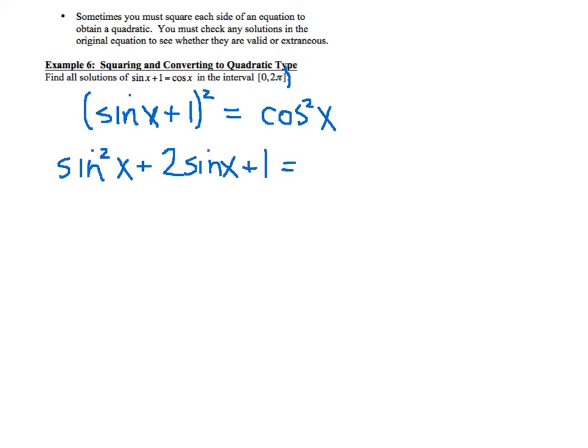And what we can do on the right is we can use a substitution for the cosine squared x. And if you substitute in 1 minus sine squared x from your Pythagorean identities, then we need to set this equation equal to 0. So what you can do is you can subtract 1 from both sides.